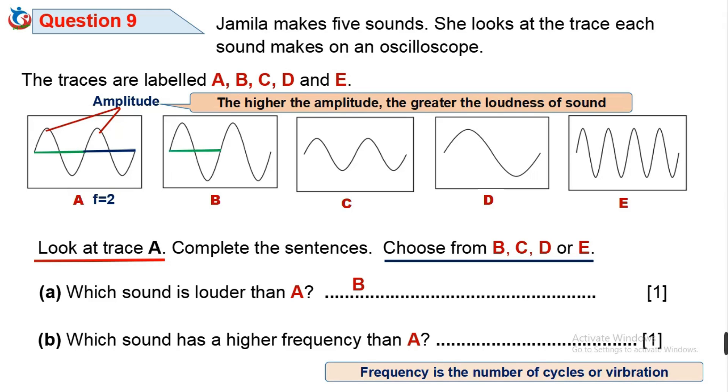The frequencies for trace B and trace C are also two. Trace D is one frequency and trace E has four frequencies. So the sound with a higher frequency than A is trace E.